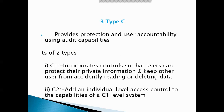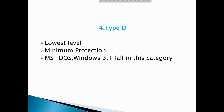Type C provides protection and user accountability using audit capabilities. Type C is of two subtypes: C1 and C2. Type D has all the properties of the class C2 system. C1 incorporates controls so that users can protect their private information and keep other users from reading or deleting data. Each individual level actually consists of the capabilities of the C1 level system. Type D is the lowest level — it is minimum protection. MS-DOS and Windows 3.1 fall in this category.